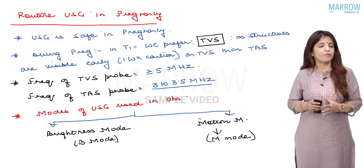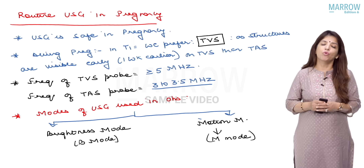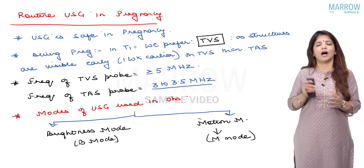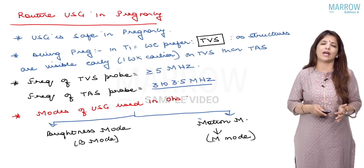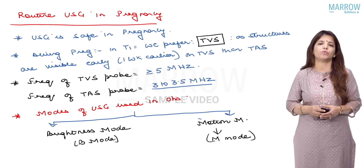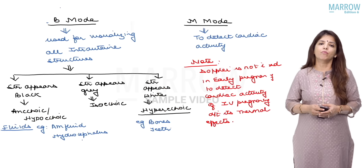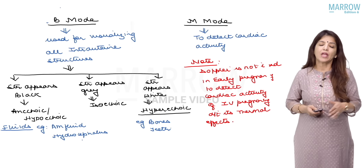In obstetrics, the modes of ultrasound which we use are basically two: the B mode, that is the brightness mode, and the M mode, which is the motion mode.